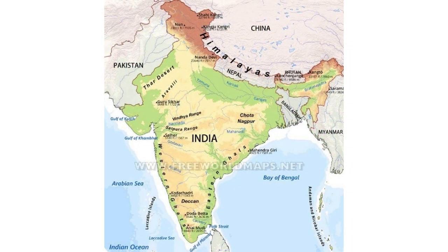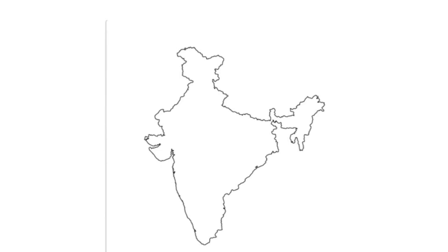India is a very big country — the world's seventh largest country by landmass. India's north is landlocked, sharing its borders with Pakistan, China, Nepal, Bangladesh, Myanmar and Bhutan. But the majority of India is a peninsula protruding southwards into the Indian Ocean. Thus, we have two seas formed out of the Indian Ocean: the Arabian Sea on the west and the Bay of Bengal on the east.